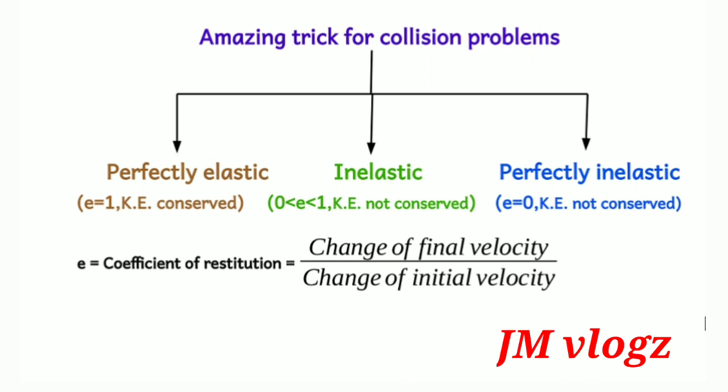In the case of perfectly inelastic collision, the value of e becomes equal to 0. The coefficient of restitution is defined as the change in final velocity divided by the change in initial velocity. In other words, it is the ratio of the velocity of separation to the velocity of approach.